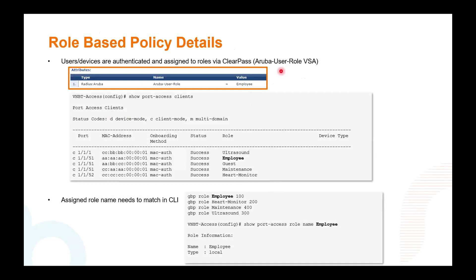Role names are passed down from ClearPass using the Aruba User Role VSA. Once a device authenticates successfully, it is assigned a role name such as employee. ClearPass does not know GBP or any Group Policy ID — it only knows the role name and pushes it down to the switch. The switch is the one that maps the role name to the ID.